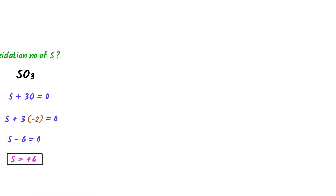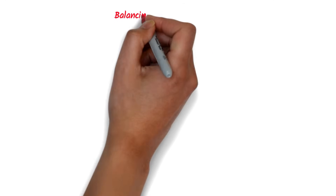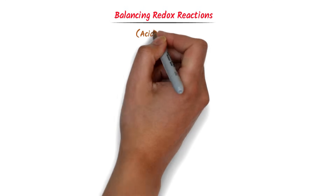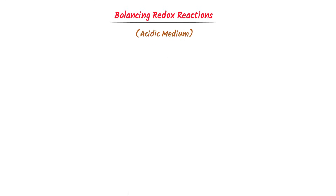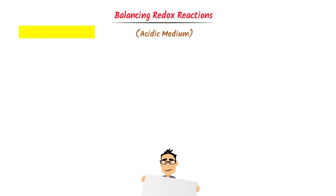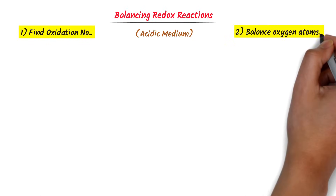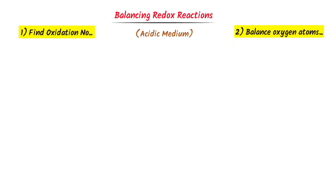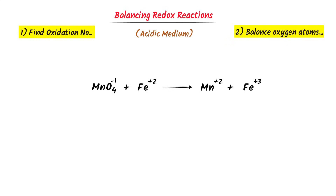Now let me teach you the super easy trick of balancing any redox reaction in acidic medium. I personally call it the two-boxes trick. The first step is to find the oxidation and reduction. The second step is to balance the oxygen atoms. For example, consider this redox reaction in acidic medium.